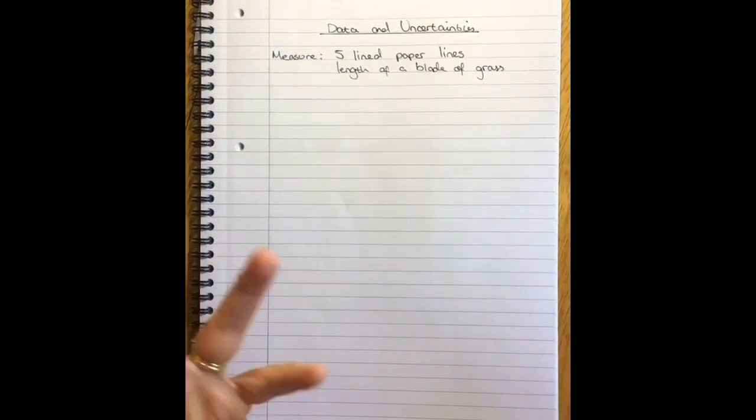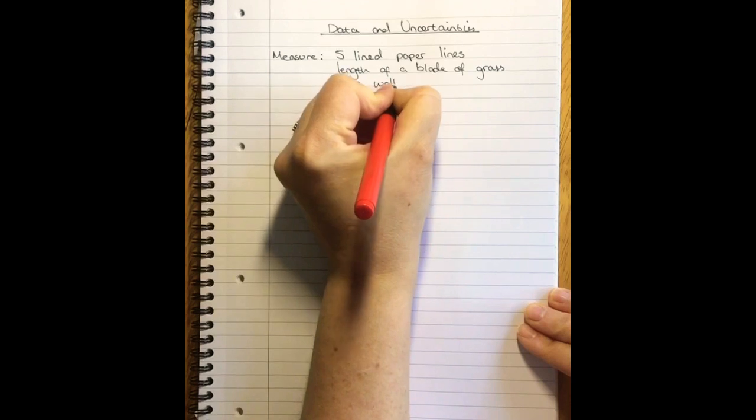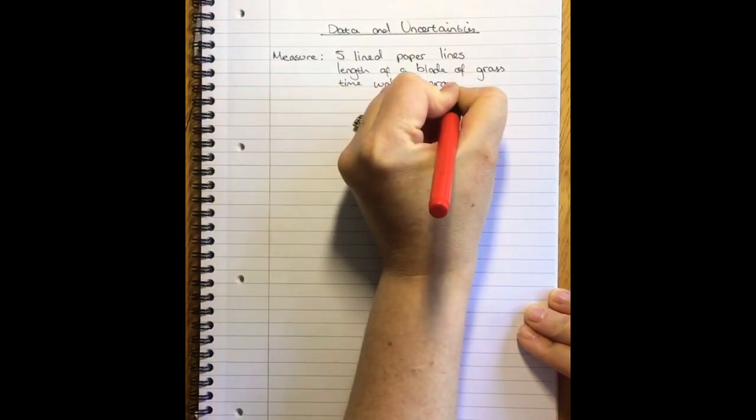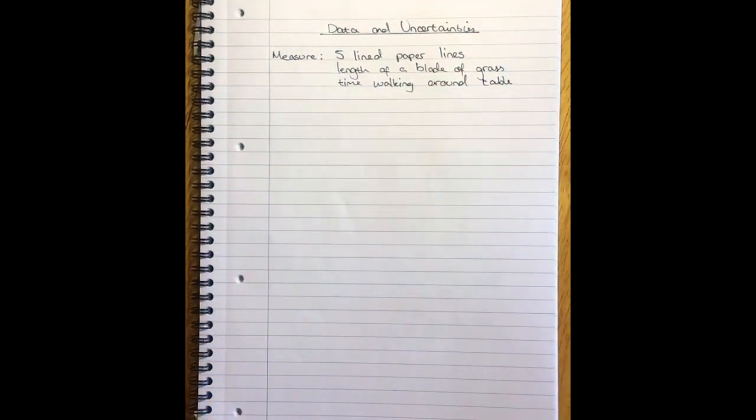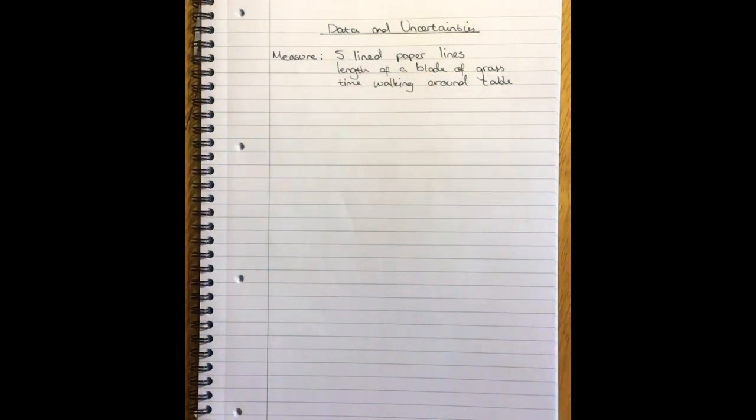And then the third measurement is just changing up the measuring device and we're going to time something. It can be literally anything, we're all going to time different numbers so it does not matter what you time. I'm going to time myself walking around my table. If you don't have a table like this, you could perhaps time yourself walking the length of your room or garden. You can use anything to time with, your phone or a watch. Anything at all.